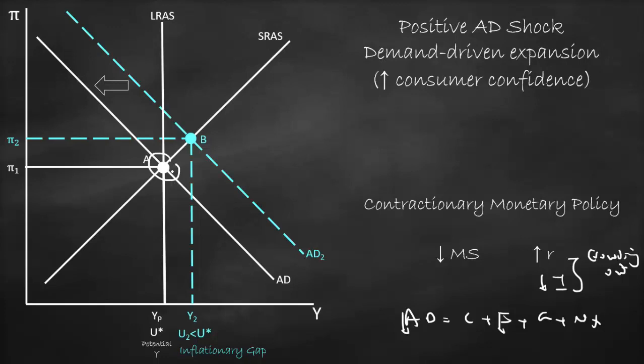Remember that both monetary policy and fiscal policy affect aggregate demand. If we use an expansionary monetary policy and expansionary fiscal policy, aggregate demand will shift to the right. If we use contractionary monetary policy and contractionary fiscal policy, aggregate demand will shift to the left.